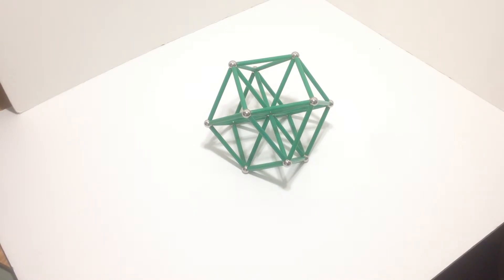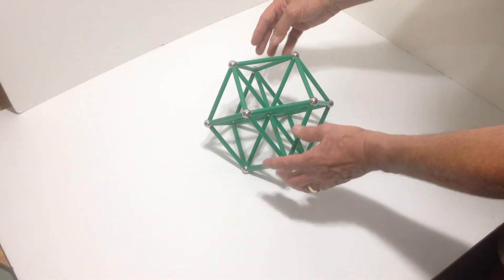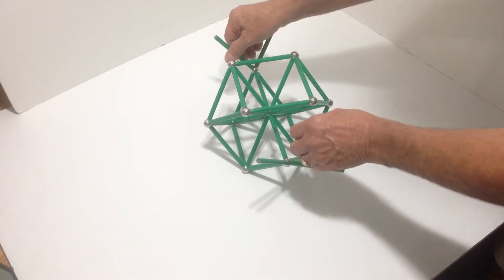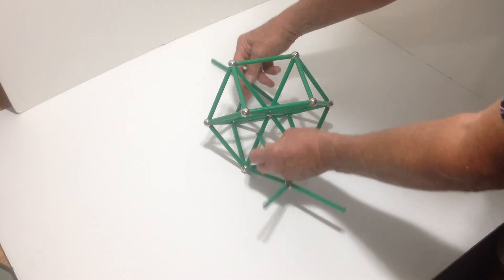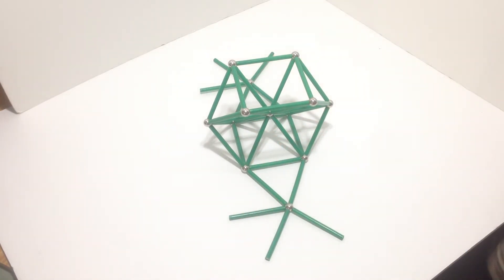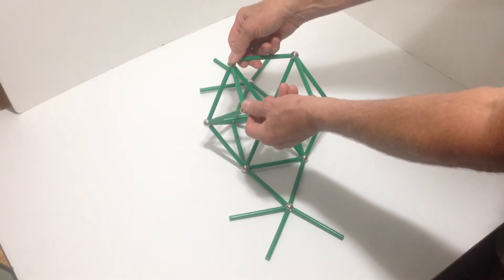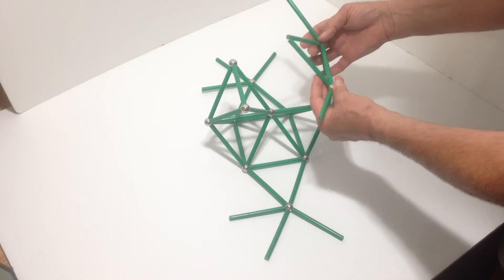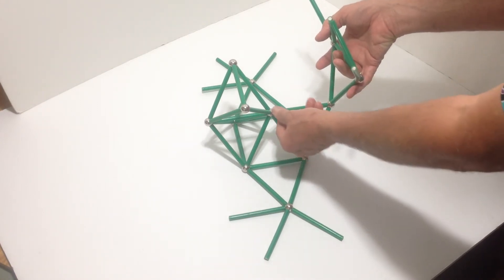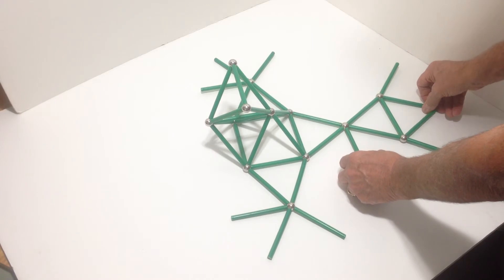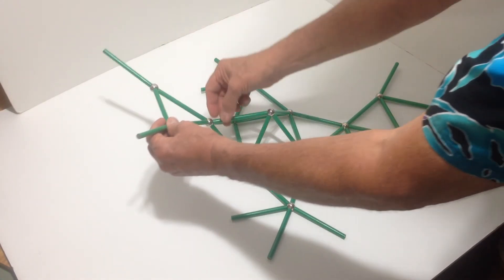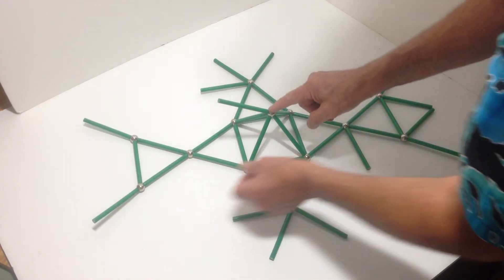Then in order to disassemble the vector equilibrium we begin by pulling these sides off first. Like that. Then this. Then this side. Then leaving this attached to the center.